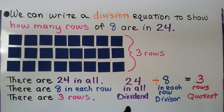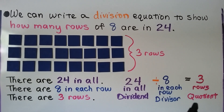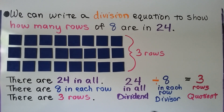We have 24 in all, there are 8 in each row, and we have 3 rows. 24 is our dividend, 8 is our divisor, and 3 is our quotient.